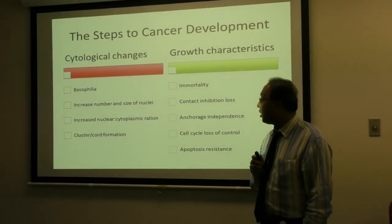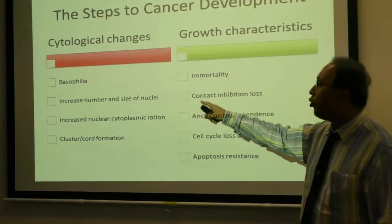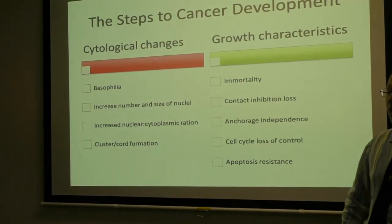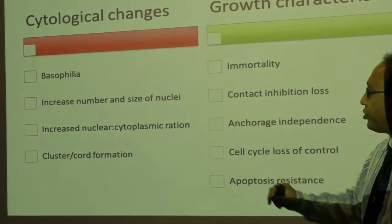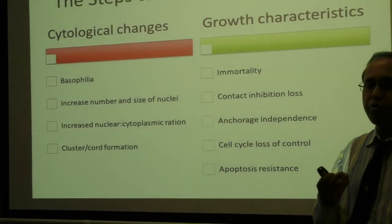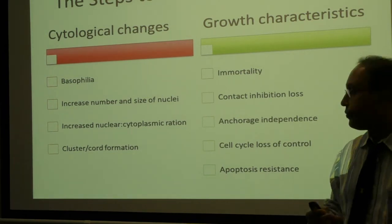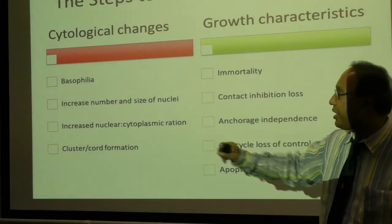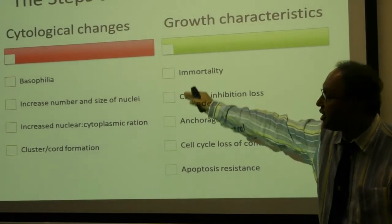The steps of cancer development, if you're looking at the cell: there is a darkening, or a more blue appearance — that's why it's called basophilia. The number and size of the nuclei increase. There is an increased nuclear-cytoplasmic ratio, which really means that the amount of chromosomal material starts to become more than what is in the cytoplasm. And then the cells start to stick together, and they are called clusters or chord formations. Those are the cytological changes.